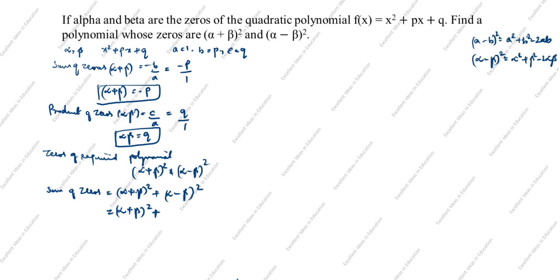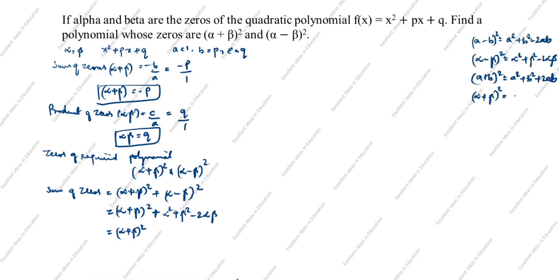We don't directly know α² + β², so we use the identity (a+b)² = a² + b² + 2ab, giving (α+β)² = α² + β² + 2αβ. Rearranging: α² + β² = (α+β)² − 2αβ. Substituting back, the sum becomes (α+β)² + (α+β)² − 2αβ − 2αβ.